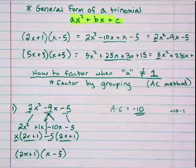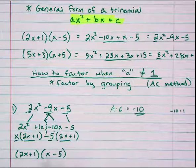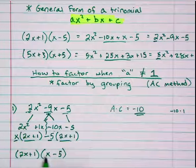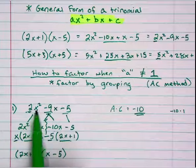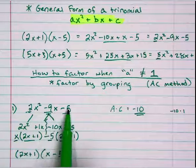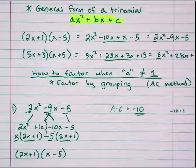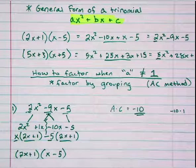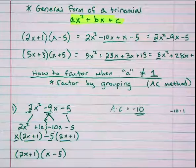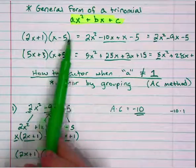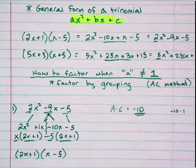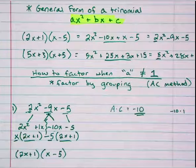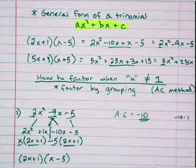Assuming I did my work correctly, 2x plus 1 times x minus 5 should equal 2x squared minus 9x minus 5. A quick way to verify is to look back at where I already did the multiplication. This is the AC method, otherwise known as factor by grouping.